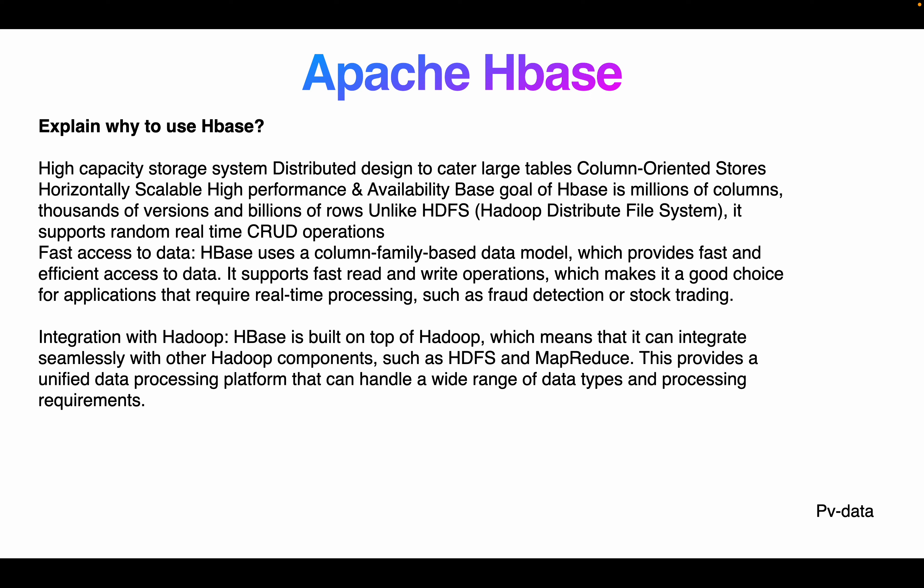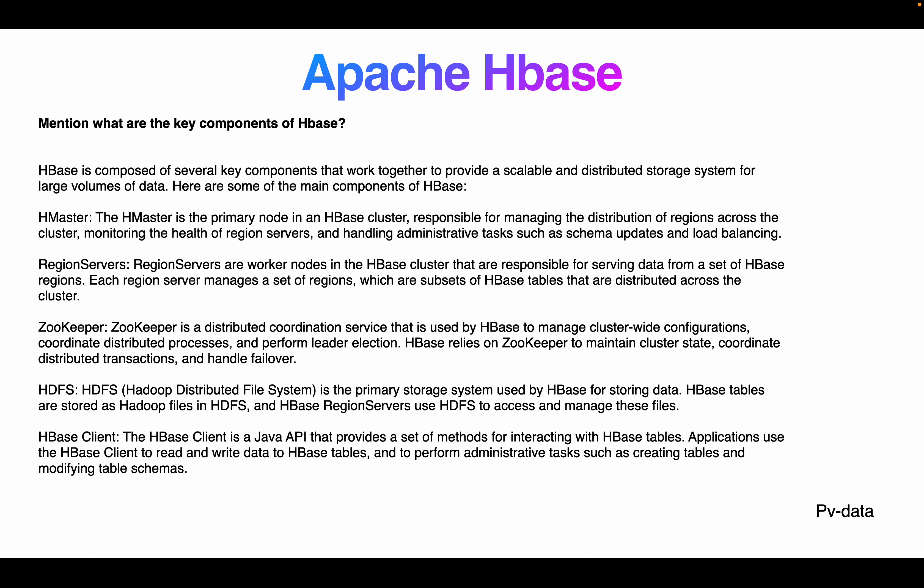Why use HBase? There are many reasons. When your requirement involves scalability and flexibility with columnar storage, HBase is a good choice. HBase is a high-capacity storage system with a distributed design to handle large tables, column-oriented storage, horizontal scalability, and high performance. HBase can handle millions of columns, thousands of versions, and billions of rows. It supports random real-time CRUD operations and fast data access using the column family-based data model, making it a good choice for applications requiring real-time data processing such as ad systems and stock trading.